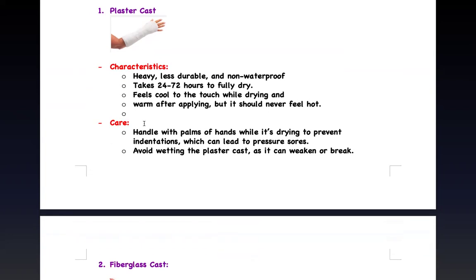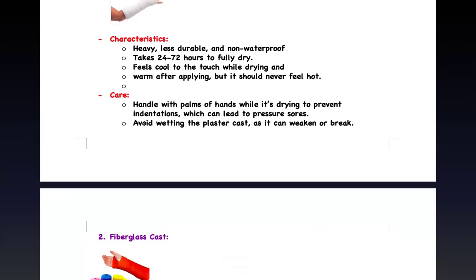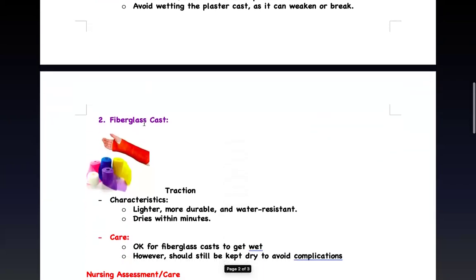For care of a plaster cast: handle it with your palm — not your fingers — because it's a plaster cast. As soon as it's placed, use your palm to hold it during the 72-hour drying period to prevent indentation. Indentations cause pressure ulcers because they become trigger points that lead to pressure ulceration. Also avoid wetting the cast — when wet, it breaks down and can no longer immobilize the fracture properly. It needs to dry and get thick to do its job.